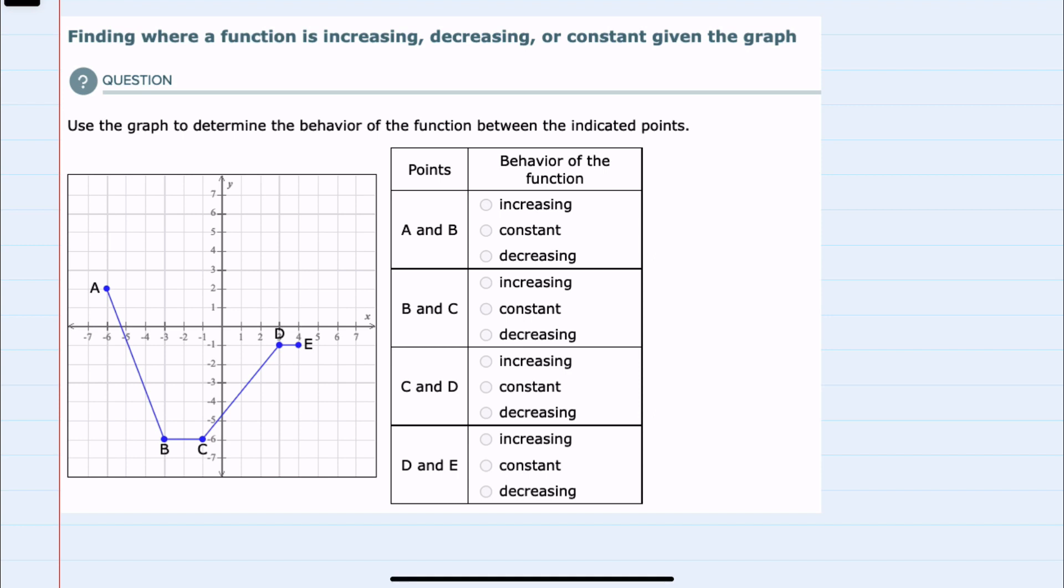The first interval from A to B: we can see that A is above B, so looking at this from left to right it is going down. So A to B is decreasing.